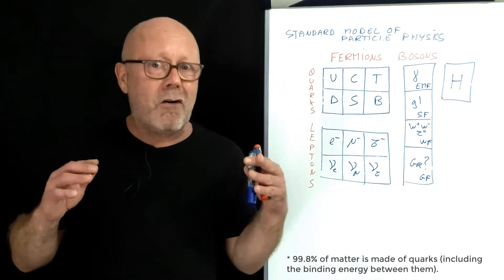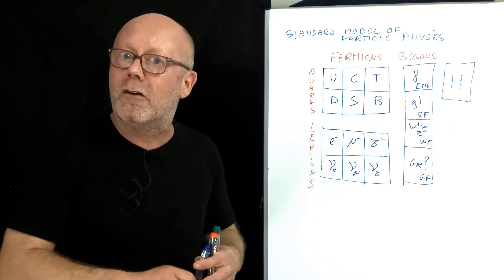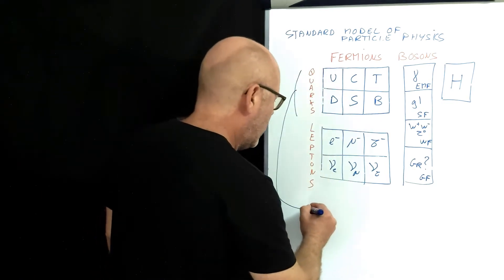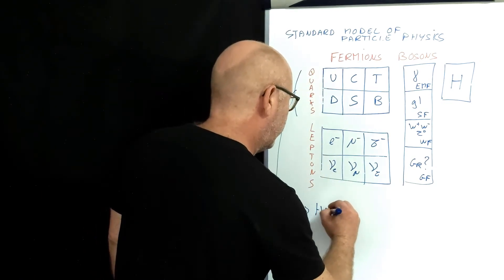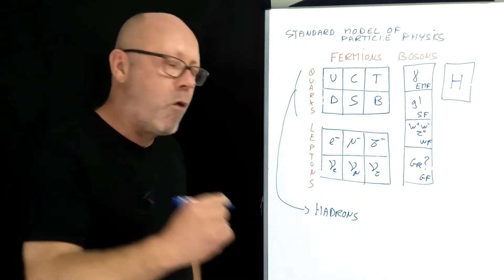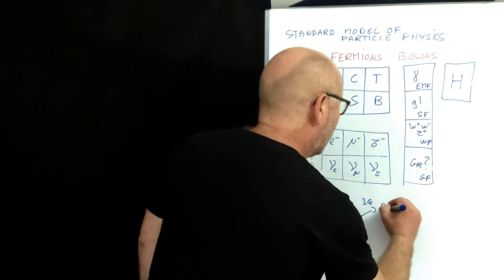But the quarks are not by themselves. They combine to make, for example, neutrons and protons. When you combine some quarks together, you get hadrons. When you combine three quarks together, you get baryons.